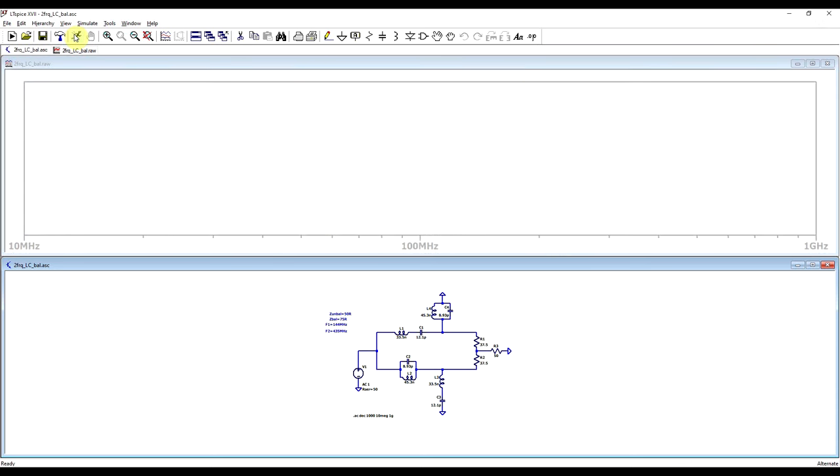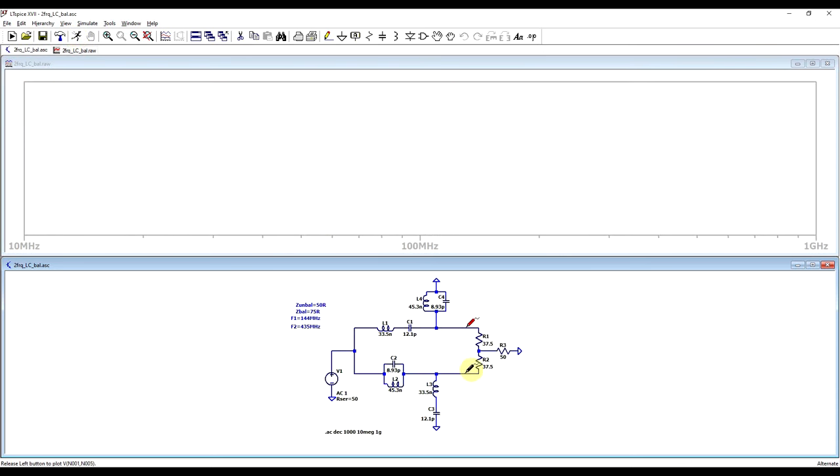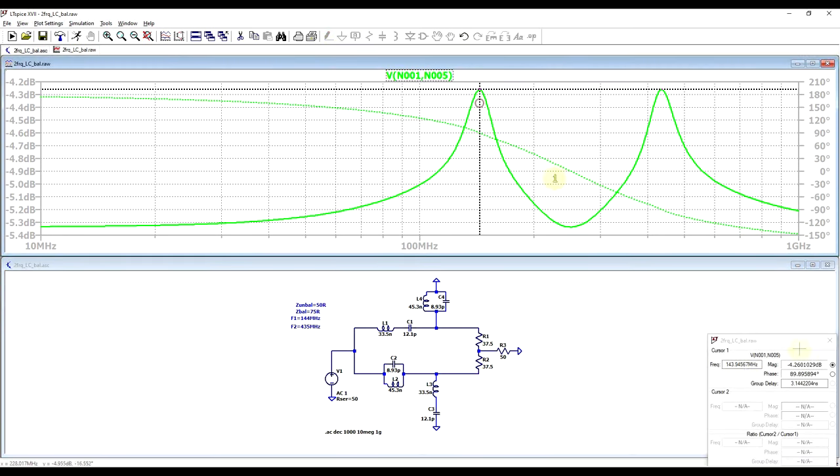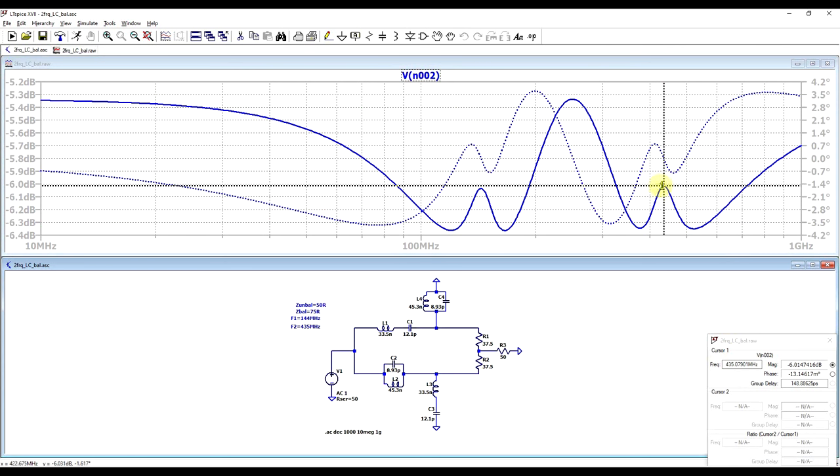Now, if we run the simulation and we look at the signal on the output, we can see that the output load sees two peak responses, one at exactly 144 megahertz and the other at 435 megahertz. And if we look to the input side, so on the signal source, at these same frequencies, we are getting our minus 6 decibel point and the zero degrees of phase shift, indicating that the circuit is indeed being matched at these two frequency points. And of course, depending on your exact needs, different values and different impedances could be calculated for.